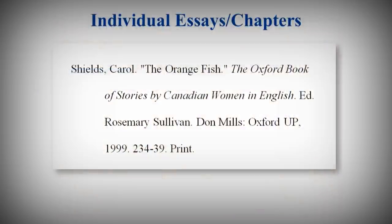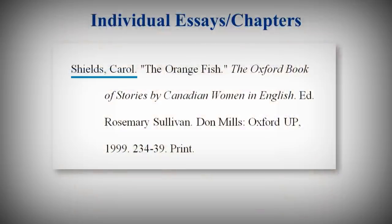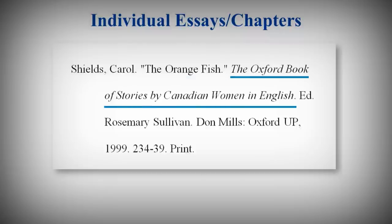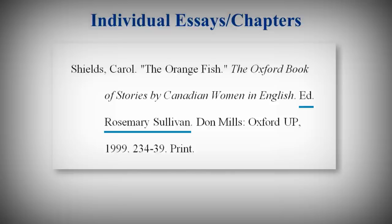What if you need to cite an individual essay or chapter in a book that has a different author than the book's editor? Start with the author of the essay or chapter, then the title of the essay or chapter in quotation marks, then the title of the book in italics, followed by the editor of the book. And remember, the first name goes first. After the publication info, but before the medium, add the page numbers for that essay or chapter.